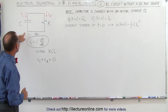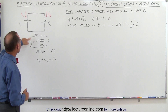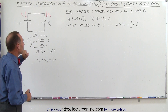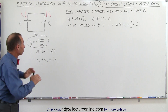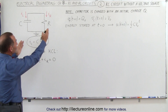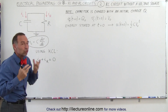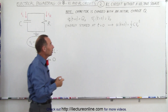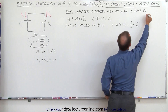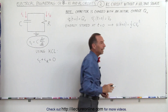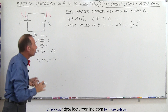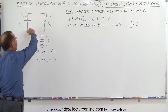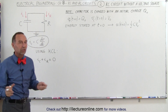We know that the current through a capacitor is equal to the capacitance times the change in voltage over time. Note that this particular circuit does not have a voltage source, so the capacitor must have been charged to some initial charge, Q sub nought. Then what happens is that the current will flow through the resistor until the capacitor is fully discharged.